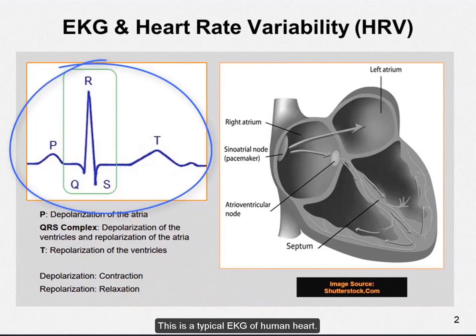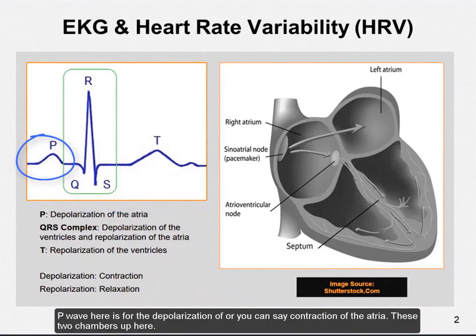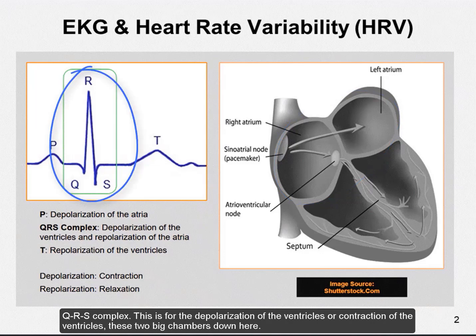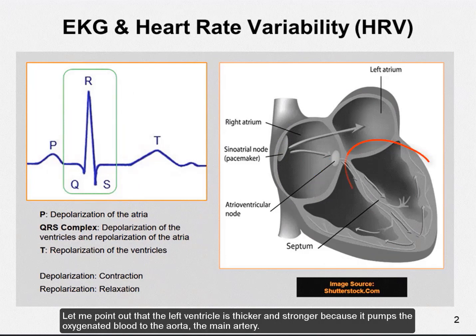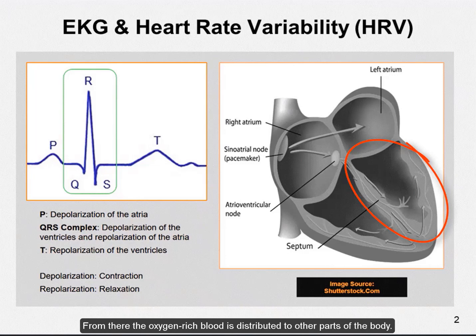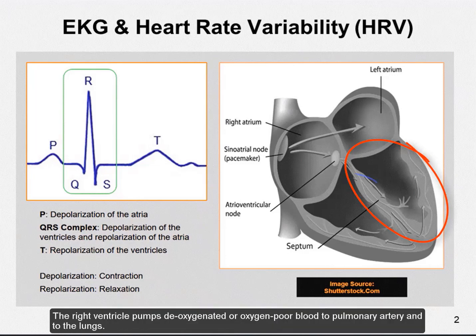This is a typical EKG of a human heart. The P-wave here is for the depolarization, or contraction, of the atria — these two chambers up here. The QRS complex is for the depolarization of the ventricles, or contraction of the ventricles — these two big chambers down here. The left ventricle is thicker and stronger because it pumps oxygenated blood to the aorta, the main artery, from which oxygenated blood is distributed to other parts of the body. The right ventricle pumps oxygen-poor blood to the pulmonary artery and to the lungs.